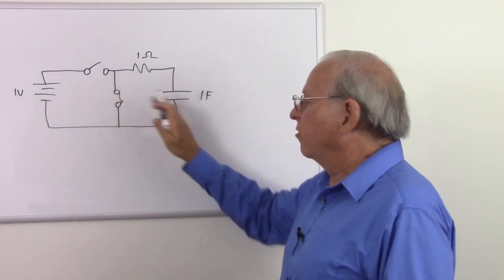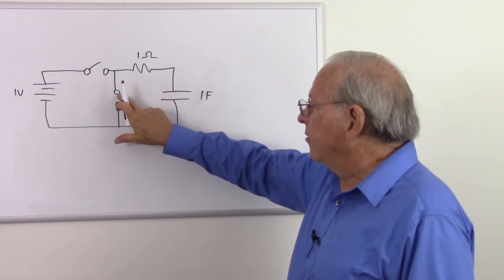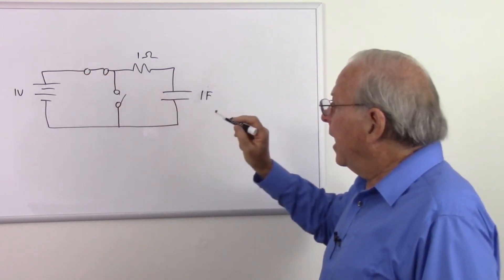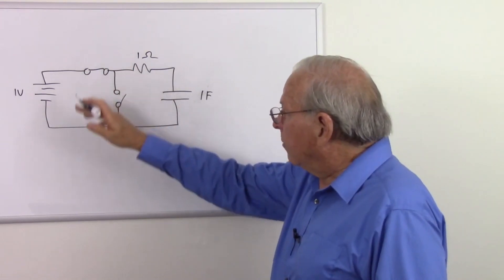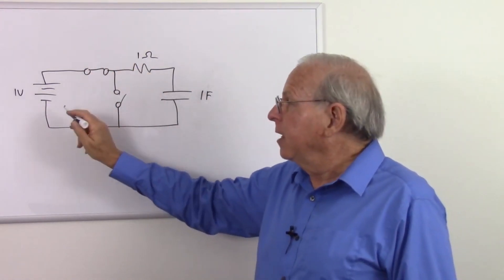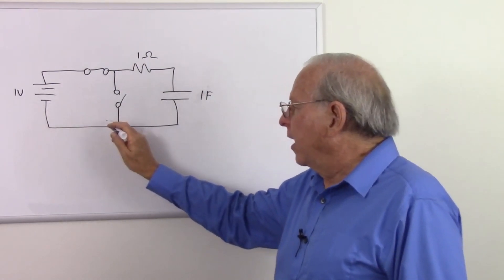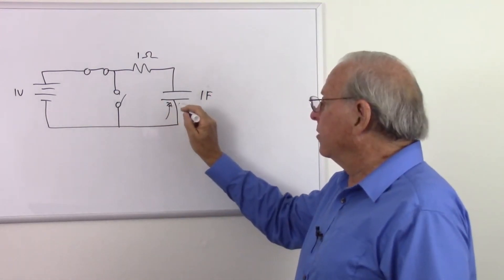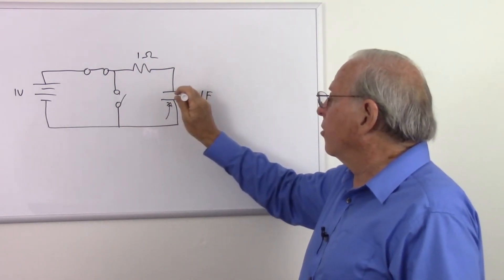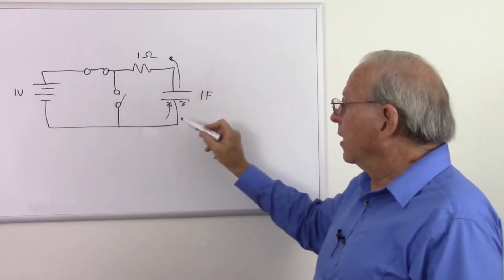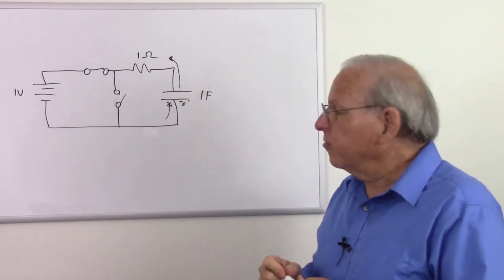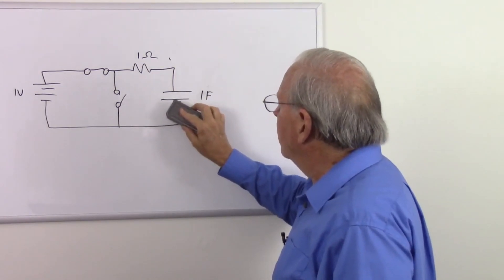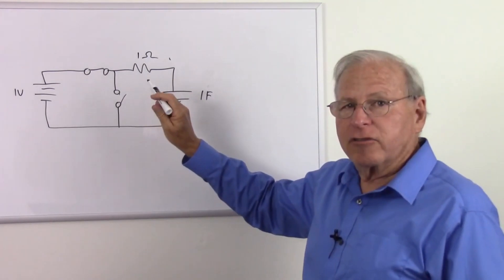First, I'm going to close this switch to make sure that capacitor is completely discharged — no energy in the capacitor. Now I'll open the switch. It's ready to charge. At the moment I close that switch, a stream of electrons flows out of the negative side of the battery and they hit the capacitor and spread out on the plates. Those electrons push electrons off the other side, so it appears that current is going right through that capacitor as if it were a short circuit.